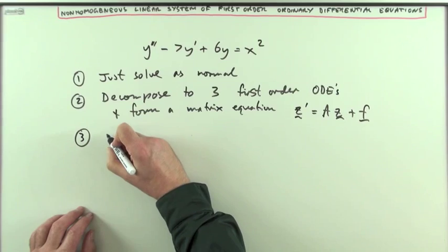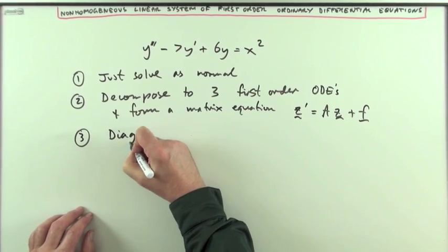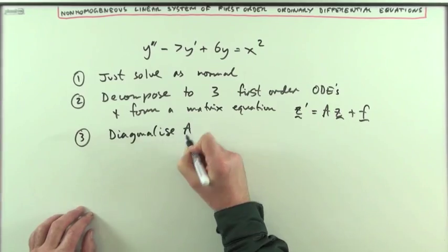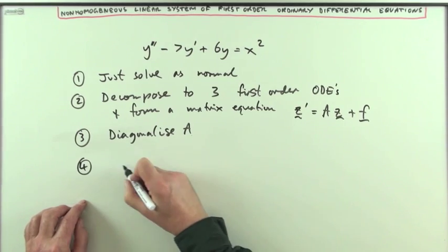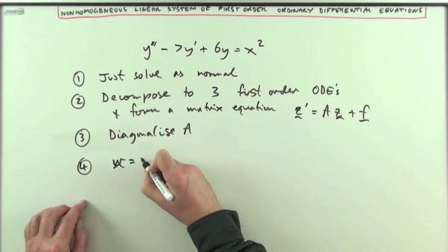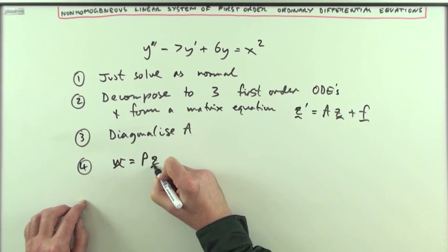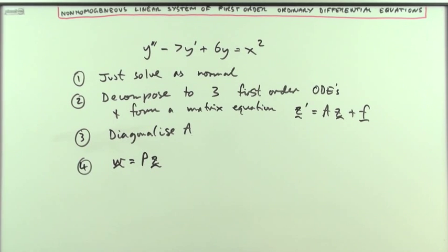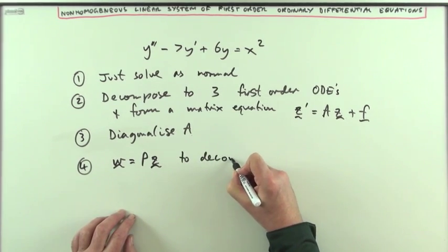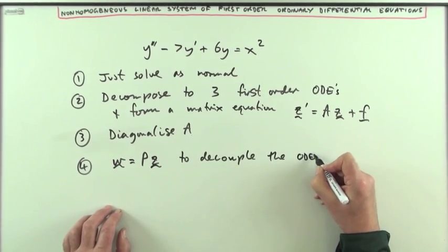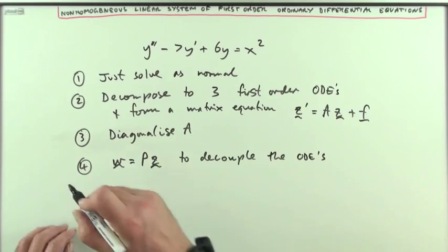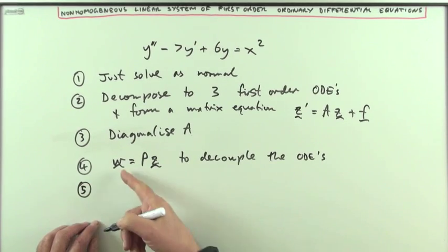The third step will be to diagonalize A—that'll take a bit of time. The fourth step will be to use a substitution equation of w equal to the inverse of matrix P of eigenvectors, in order to decouple, to disentangle the ODEs.